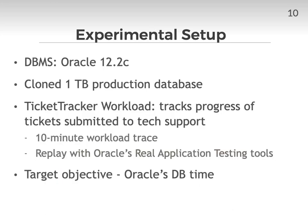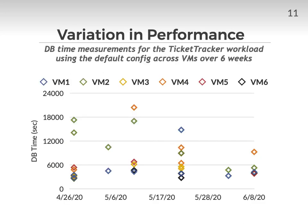The DBMS version we used in our experiments is Oracle 12.2c. For this study, we cloned a 1TB production database and captured a 10-minute workload trace, which we replayed using Oracle's Real Application Testing Toolkit. The production workload in our experiments is an internal application to track the assignment, status, and progress of tickets submitted to tech support — we refer to it as the ticket tracker workload. The target objective that we tuned for is an Oracle-specific metric called dbtime, which measures the total time spent in database calls by foreground sessions.